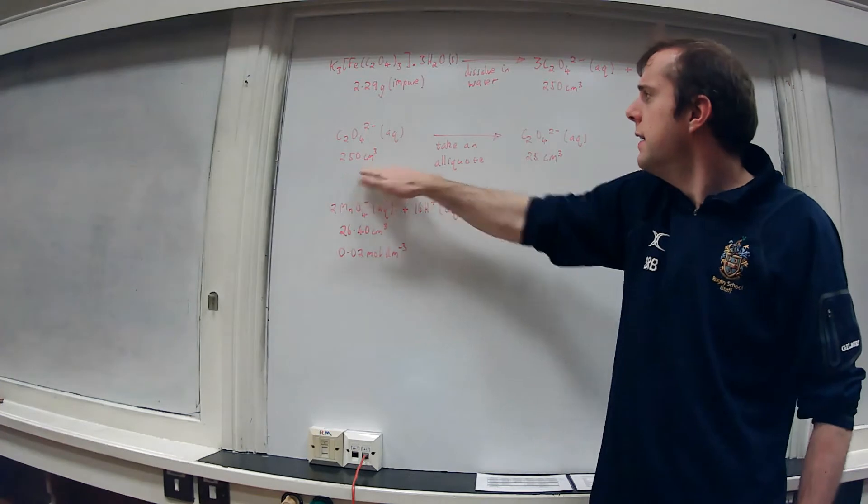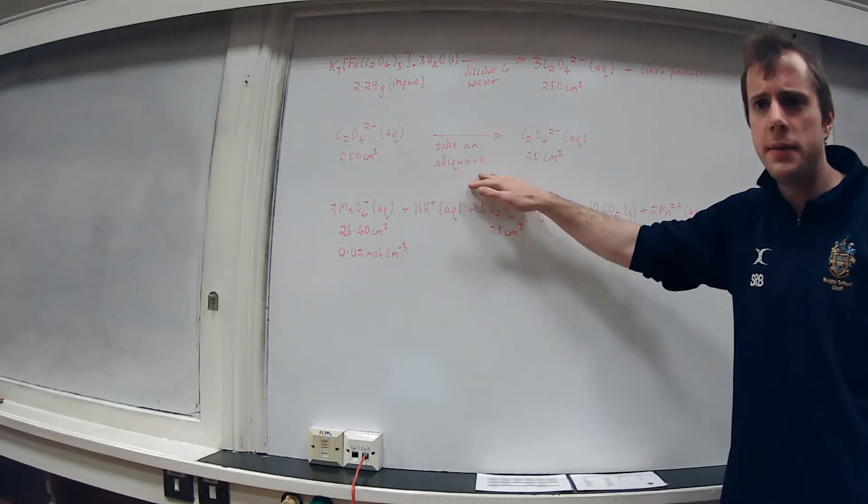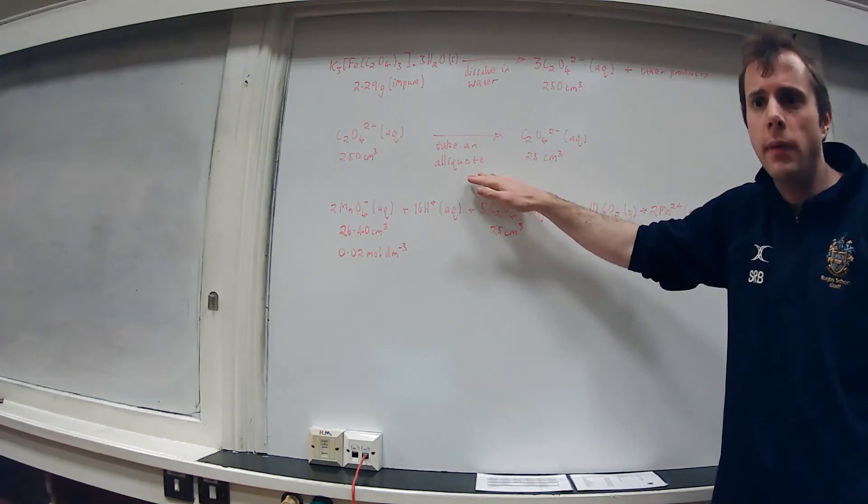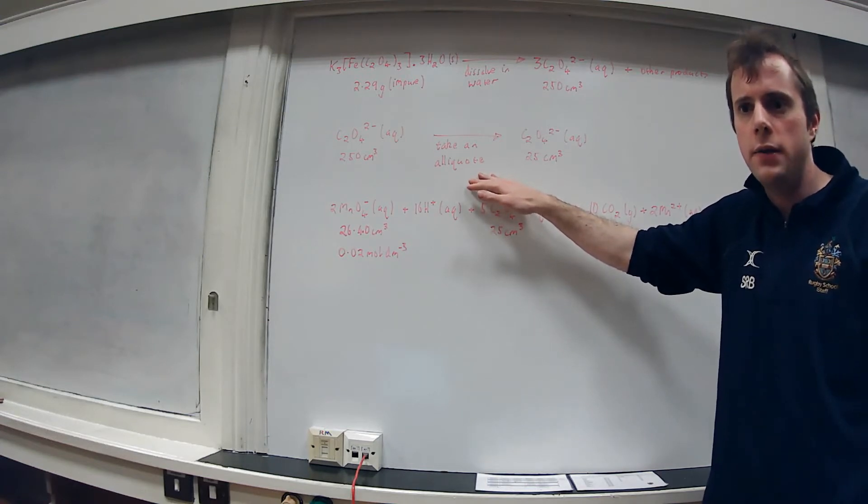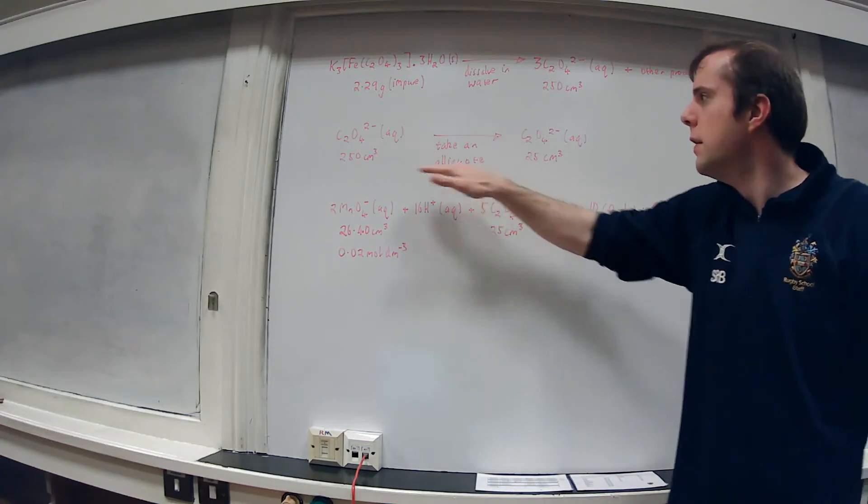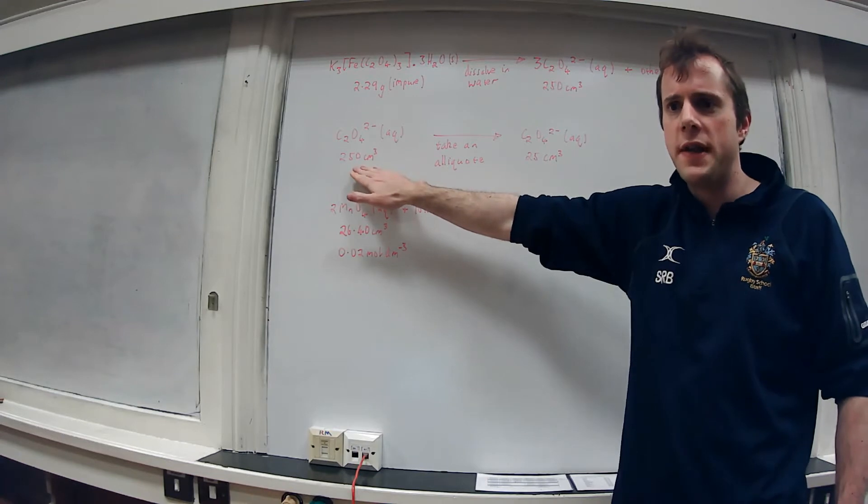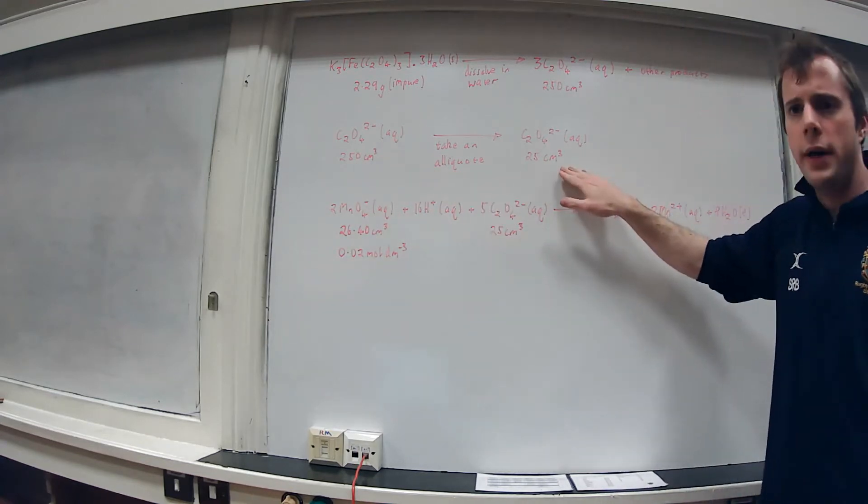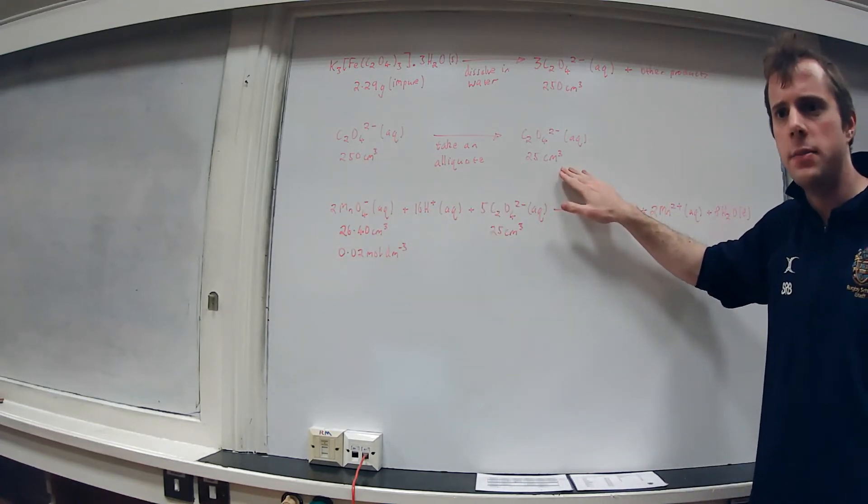I then take what we call an aliquot, so a sample out of the larger sample, and we would do that using a pipette. So we started with 250 cubic centimeters and we've drawn out a 25 cubic centimeter sample.